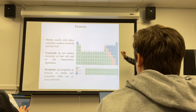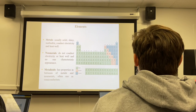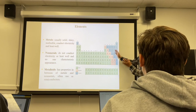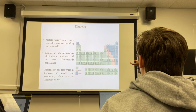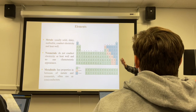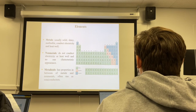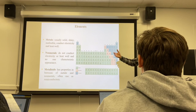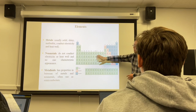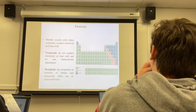Between metals and nonmetals, along the separation line, there are a few elements called metalloids. Metalloids sometimes have both metal and nonmetal properties — sometimes shiny but not conducting, or conducting electricity only in one direction. Silicon is a classic example, commonly used in semiconductors, computer chips, and cell phone chips. We have far more metals than nonmetals and metalloids combined, and in this class we'll focus mostly on metals and nonmetals.